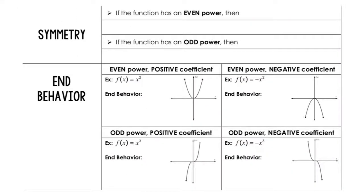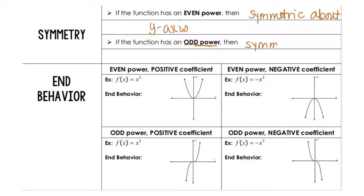Looking at the exponents: if we have an even power, then that function is symmetric with the y-axis. And if we have an odd power, the function is symmetric with the origin.